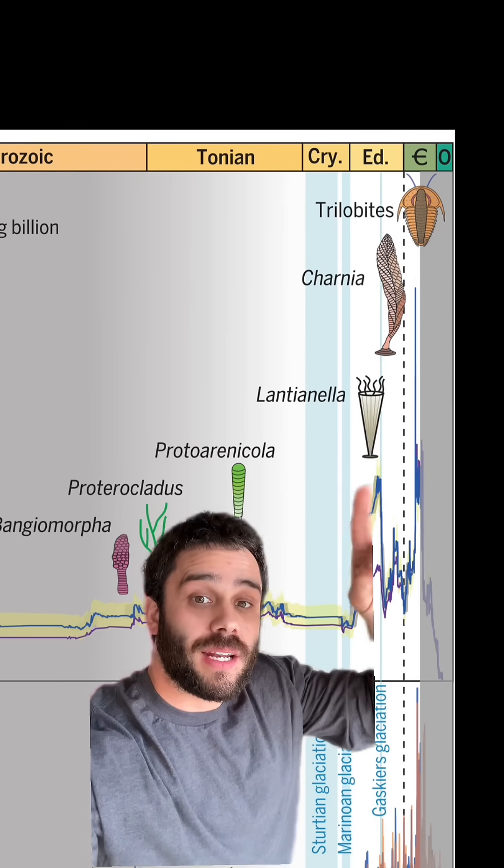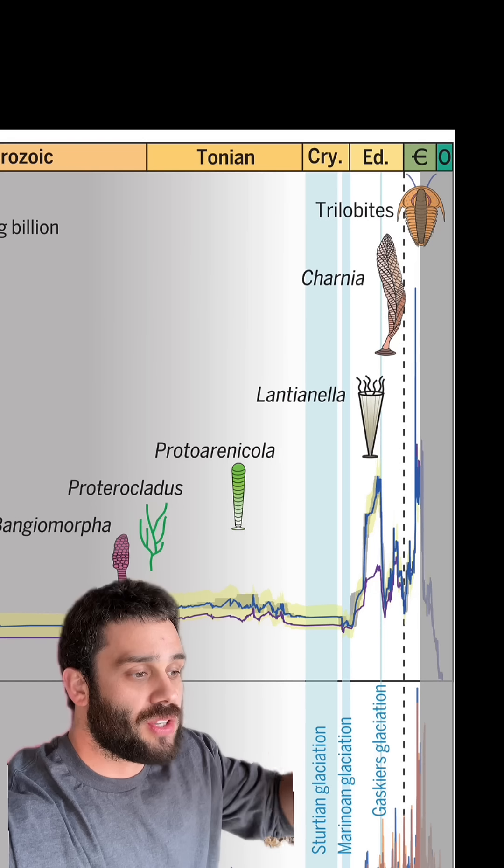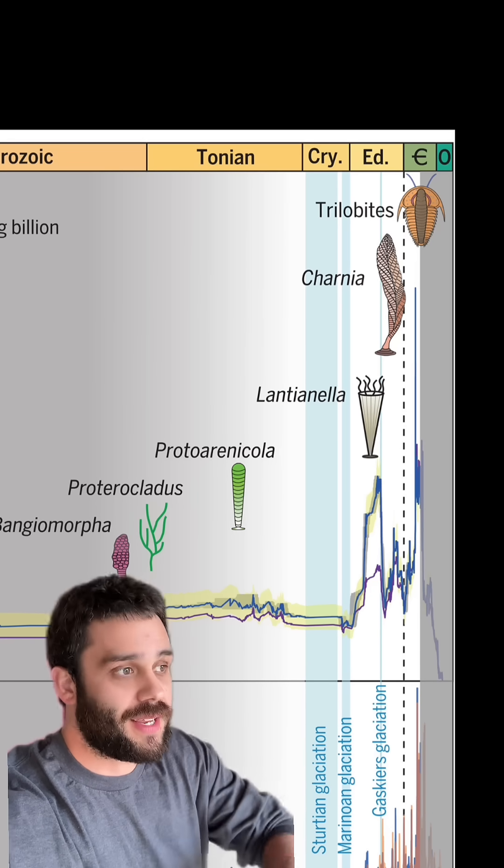Once it happens, animal life starts getting more and more complex, and the rate of speciation, the rate of new types of animals, it explodes.